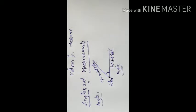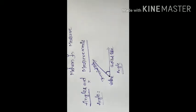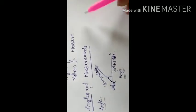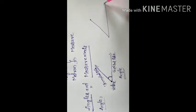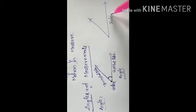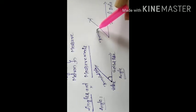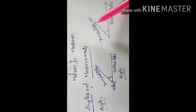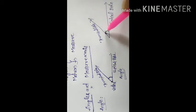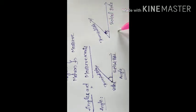If the direction of rotation is anti-clockwise, then the angle is taken as positive. This is the initial side and this is the terminal side. When the rotation is in anti-clockwise direction, the angle is taken as positive.